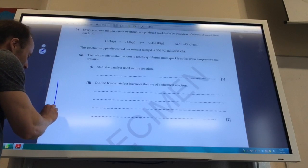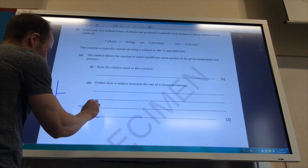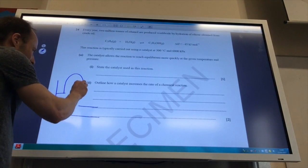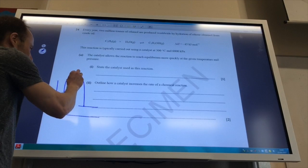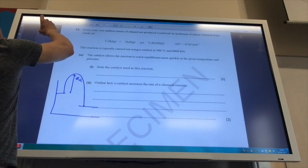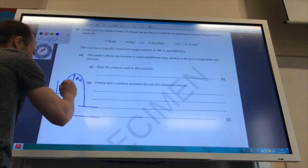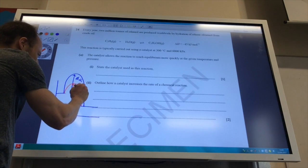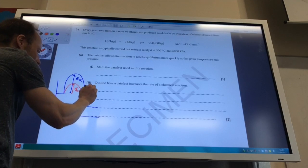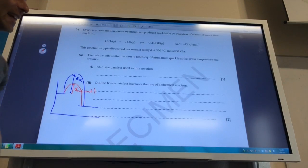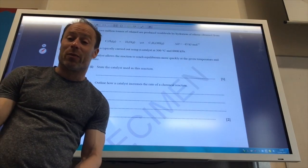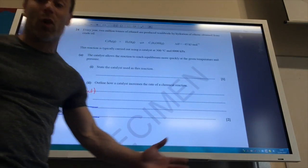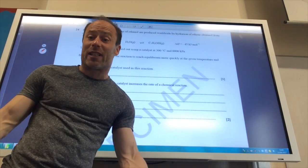Well, it allows the reaction to proceed at lower activation energy. So if you remember, you can do this on your reaction profile. You've got your reactants and your products there. And you've got your activation energy there, EA. And then your EA with a catalyst, it's a lower bump. So you've got EA catalyst in red there, which is lower. So it lowers the activation energy for a reaction by providing an alternative route. And therefore, more molecules have enough energy for a successful collision.